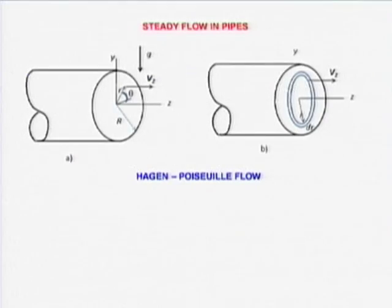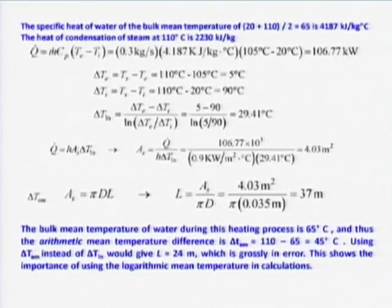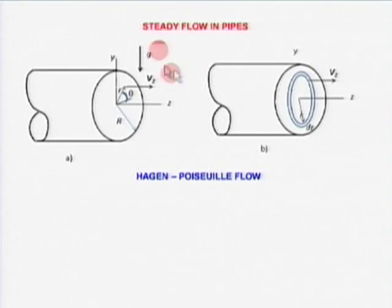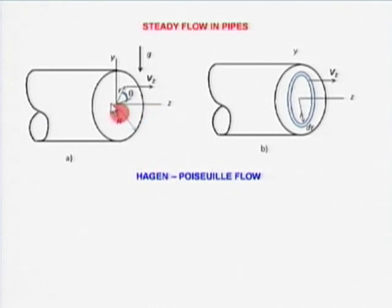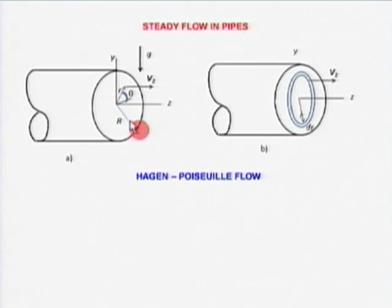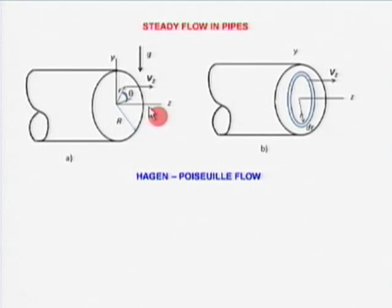Let us go again through the velocity profile. This is steady flow in pipes — the Hagen-Poiseuille flow. For fully developed flow, V_Z is a function of only R, with no V_R and V_theta. That is the fully developed concept.